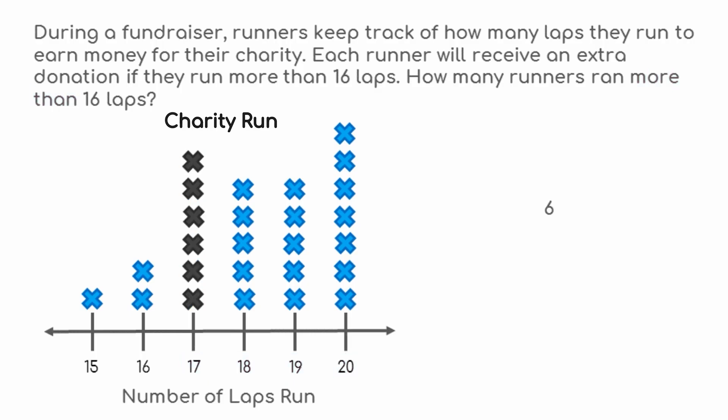Six runners ran 17 laps, five runners ran 18 laps, five runners ran 19 laps, and seven runners ran 20 laps. Altogether, there are 23 X's, so 23 runners ran more than 16 laps.